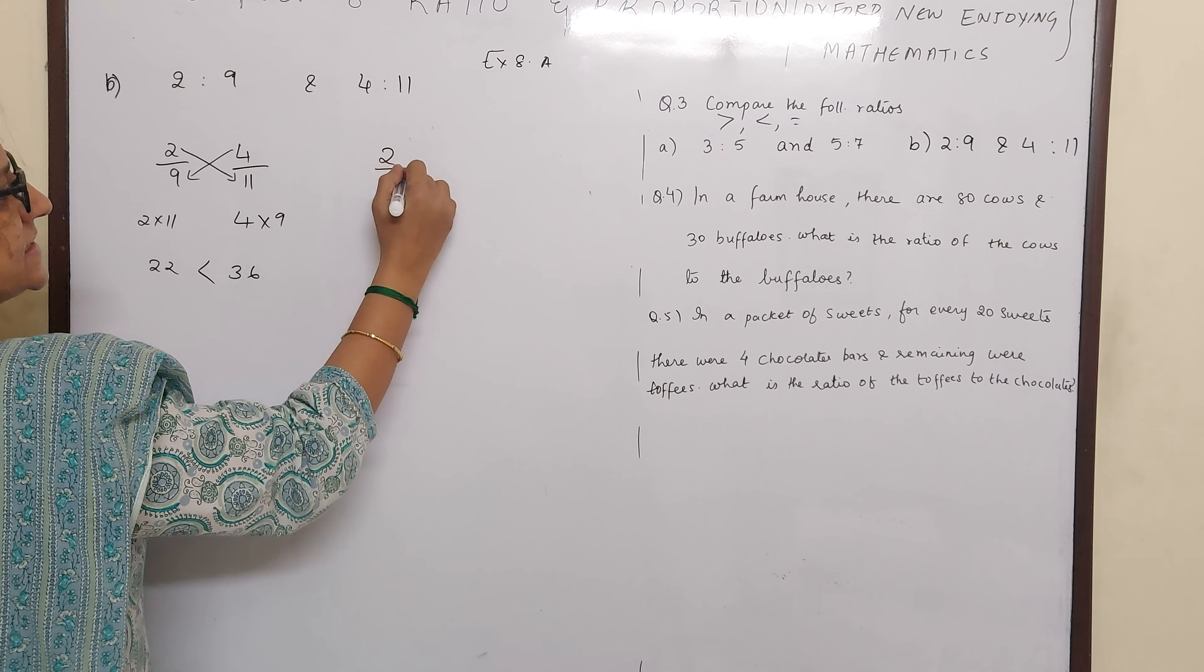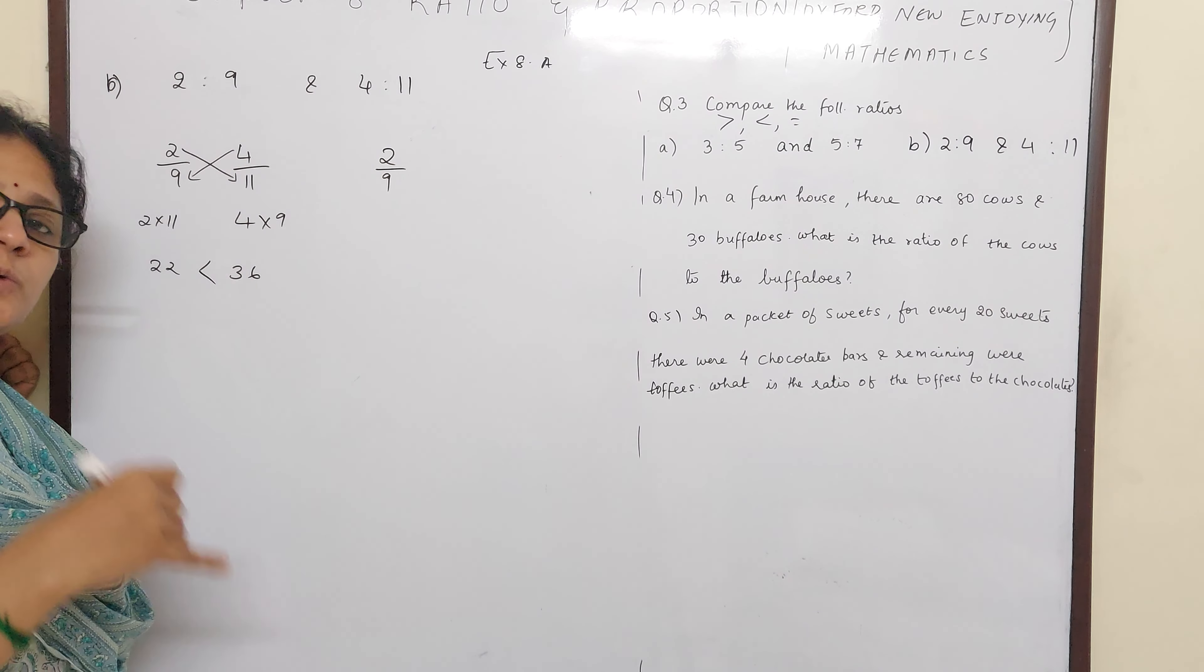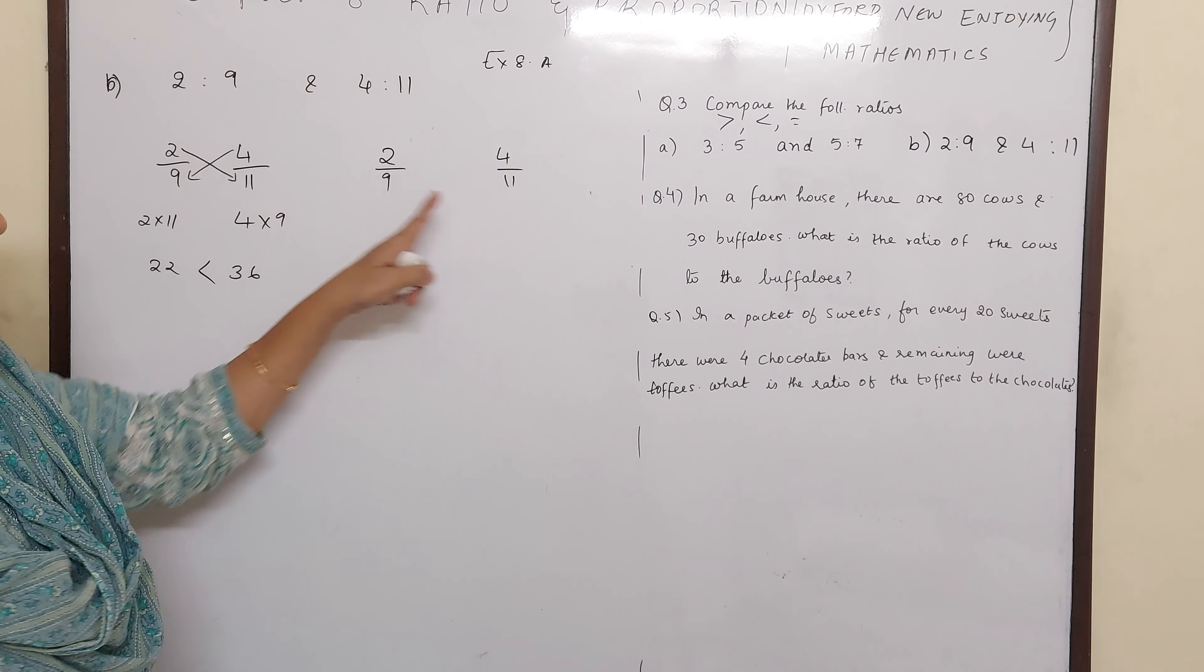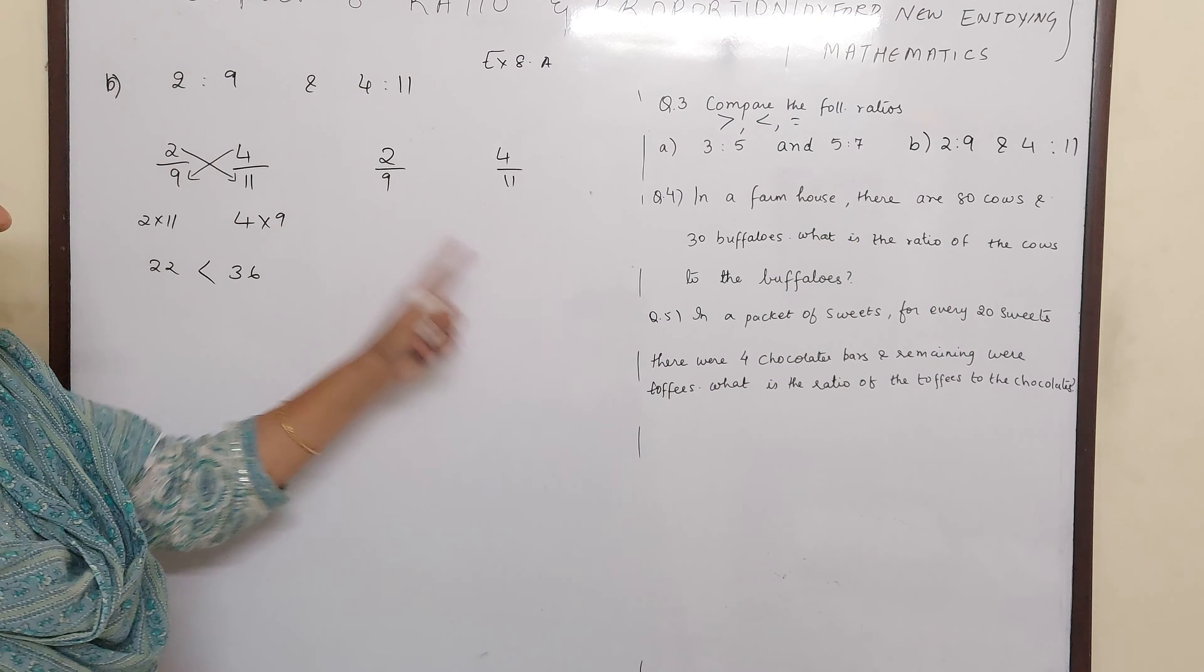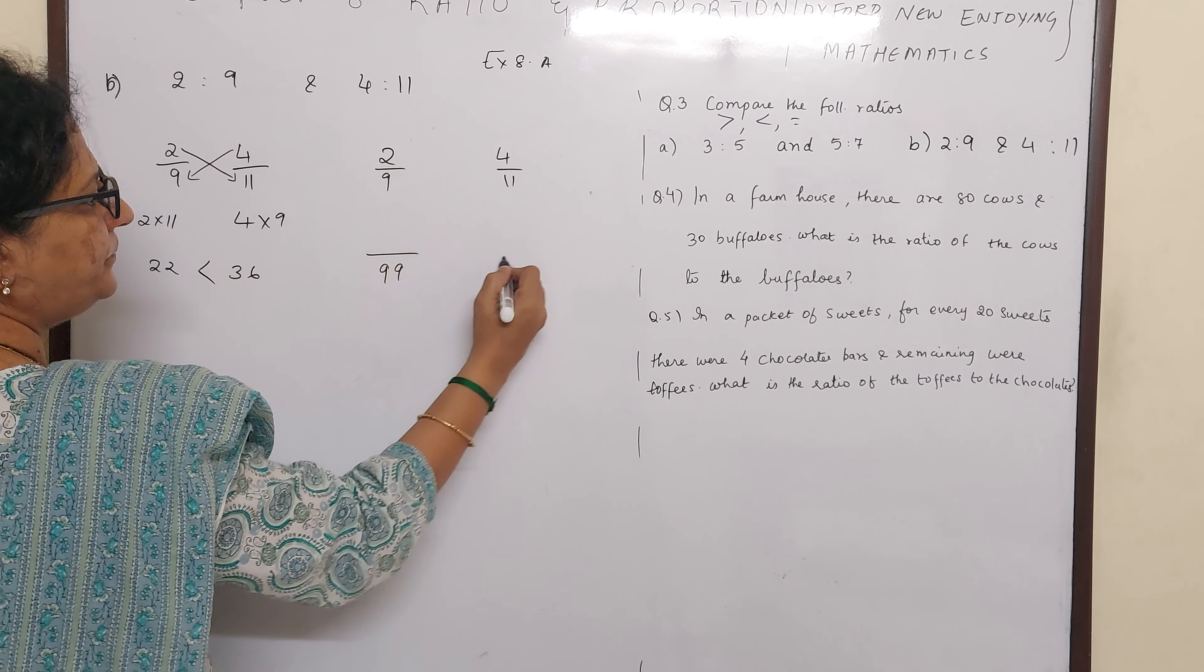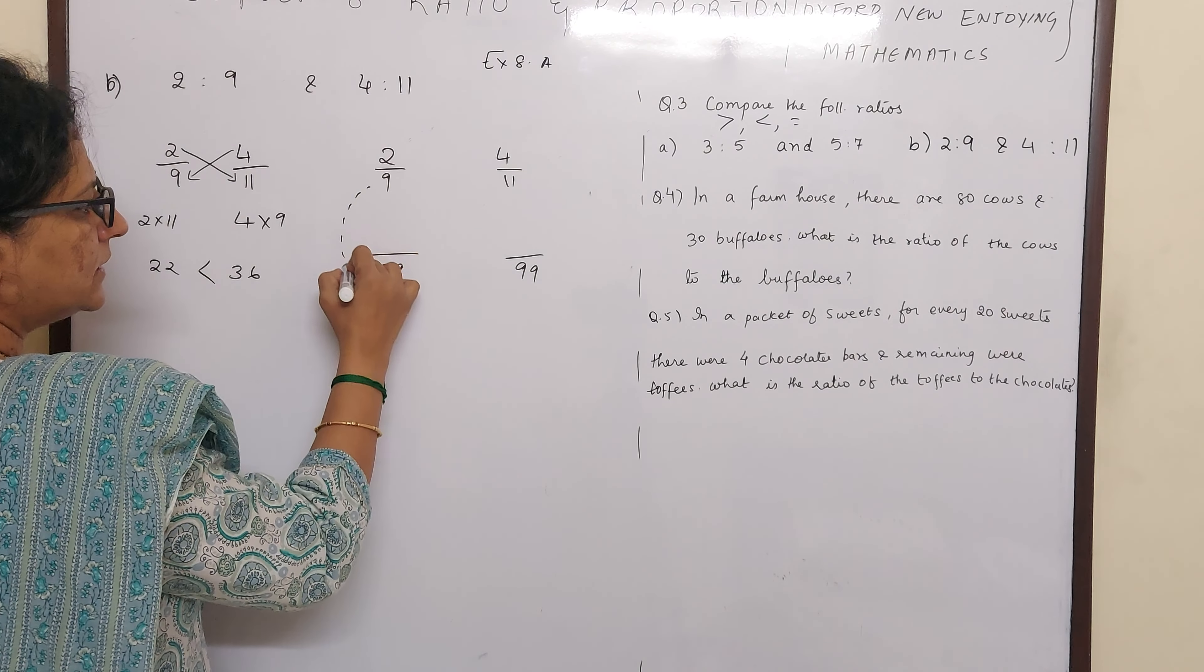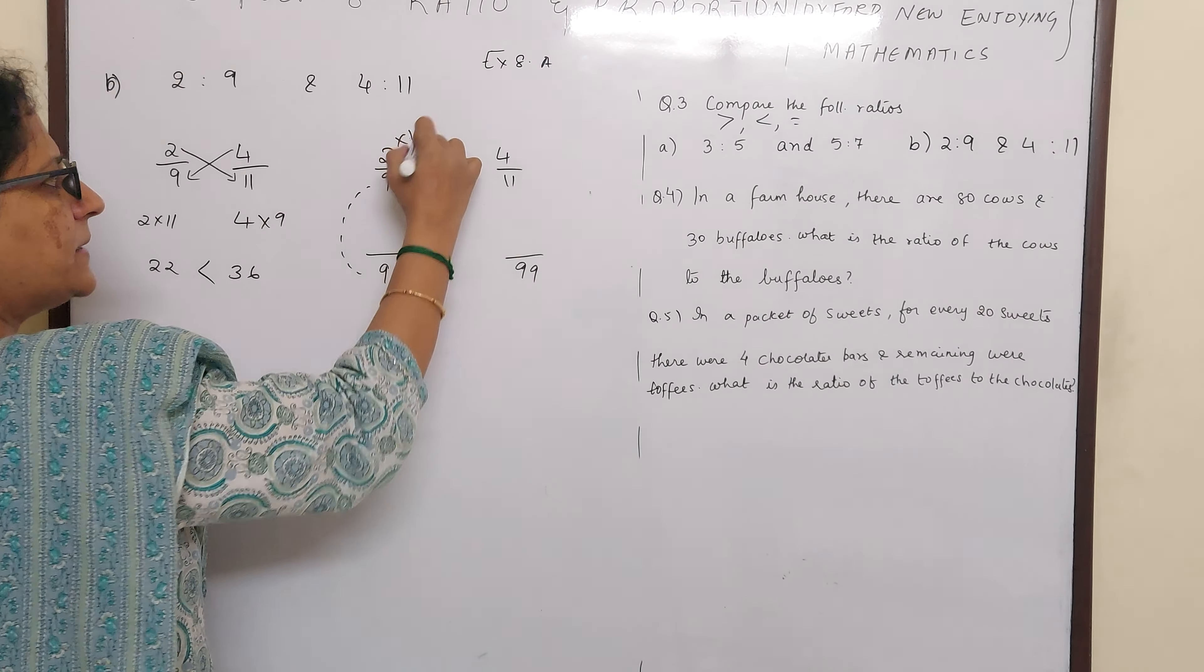Otherwise you have to go for LCM method. The other method is converting these ratios into like fractions. 2 by 9 and 4 by 11. Now 11 is a prime number. And there are no common factors between this. So I can say if you find out LCM you will get their product only. So 99 will be your LCM. You can work it out. So how did 9 become 99 children now? 9 elevens are. That means up also you have to multiply by 11.